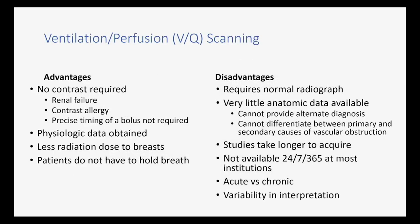Ventilation-perfusion scanning has definite advantages. You don't need contrast, so if there are issues with contrast allergy — especially anaphylaxis — or in people with chronic renal failure, it's a big advantage. Also, precise timing of the bolus isn't an issue, and patients don't have to hold their breath. There is less radiation dose in most VQ scans. However, it requires a normal radiograph, and the main limitation is it really doesn't give anatomic data. CT gives a lot of additional information, though CT studies take much longer to acquire. CT is available at all times, while differentiating between acute and chronic disease is not always possible with a VQ scan, and there's some variability in interpretation.